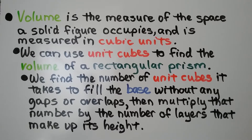Volume is the measure of the space a solid figure occupies and is measured in cubic units. We can use unit cubes to find the volume of a rectangular prism. We find the number of unit cubes it takes to fill the base without any gaps or overlaps, then multiply that number by the number of layers that make up its height.